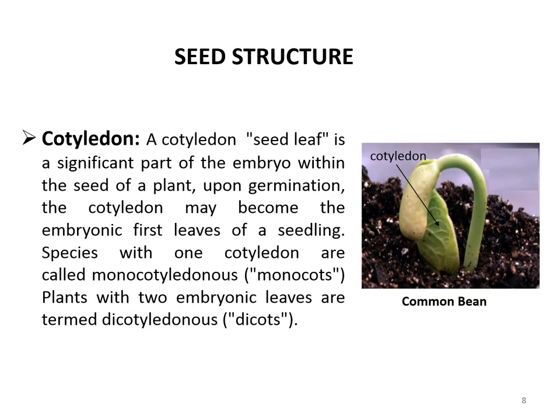The next part is the cotyledon, which is the first leaf that germinates. It is filled with stored food that the plant uses before photosynthesis. The number of cotyledons present is one of the most important features used by botanists to classify flowering plants. Species with one cotyledon are called monocots, while plants with two embryonic leaves are called dicots.